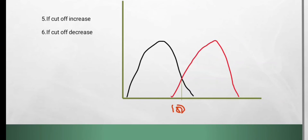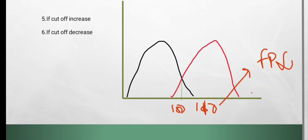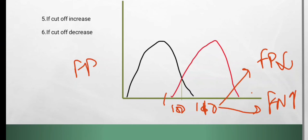Now, what if we increase the cutoff — suppose from 100 to 110? False positive results will decrease but false negatives will increase. If the cutoff decreases, false positives will increase — healthy people will start testing positive — but false negatives will decrease.